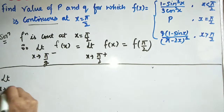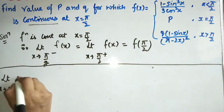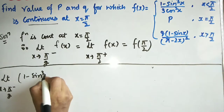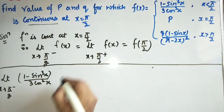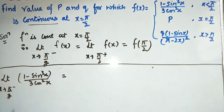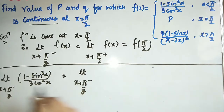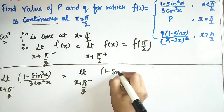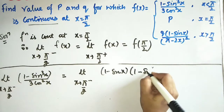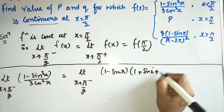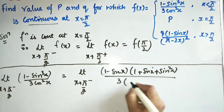For the left-hand limit, limit x → π/2⁻, the function is (1 - sin³x) / (3cos²x). Since substituting π/2 gives 0/0, we need to simplify. Using the identity a³ - b³ = (a - b)(a² + ab + b²), we can factor the numerator as (1 - sinx)(1 + sinx + sin²x).